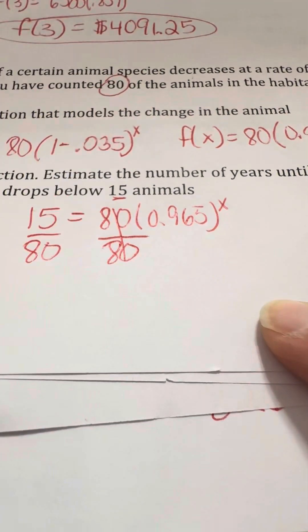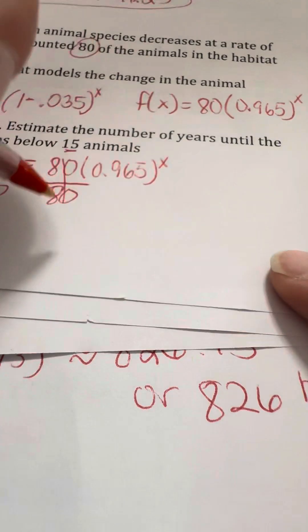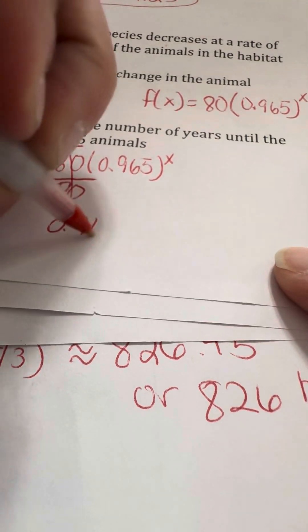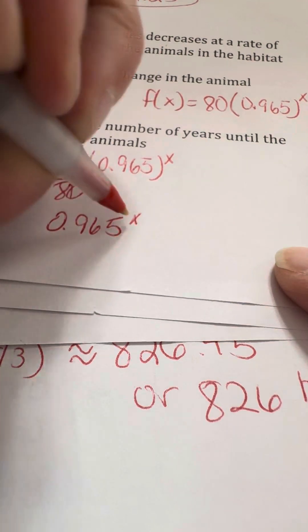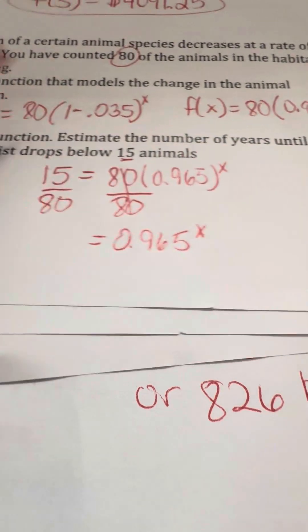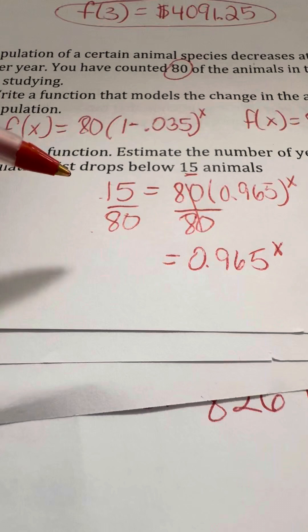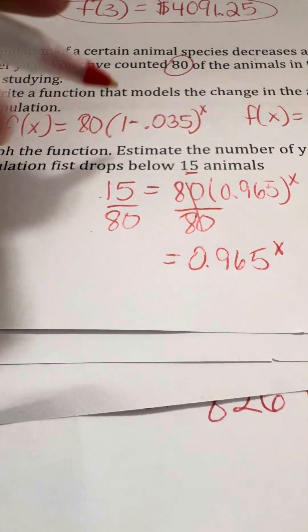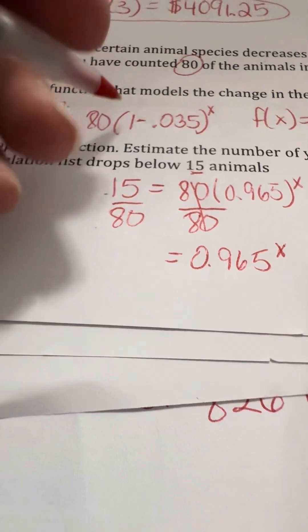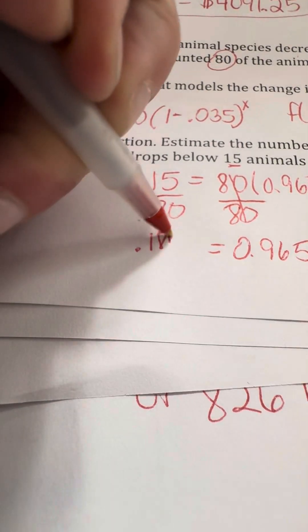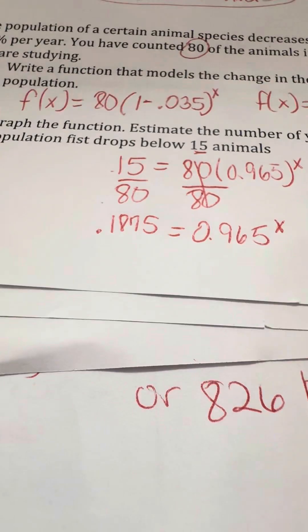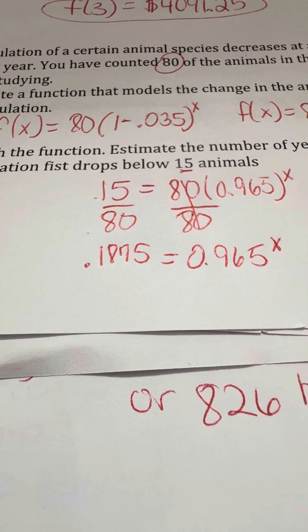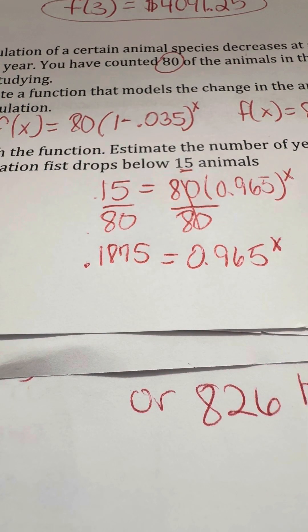So we're going to cancel that out. It leaves me with 1 there. It leaves me with 0.965 to the x power. And we're going to just do 15 divided by 80. And when we do that, we're going to end up getting an answer of 0.1875. So 15 divided by 80. And that will give me that answer.